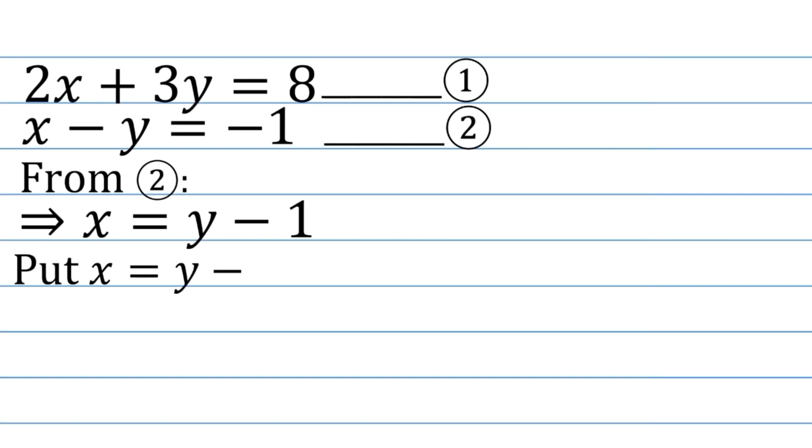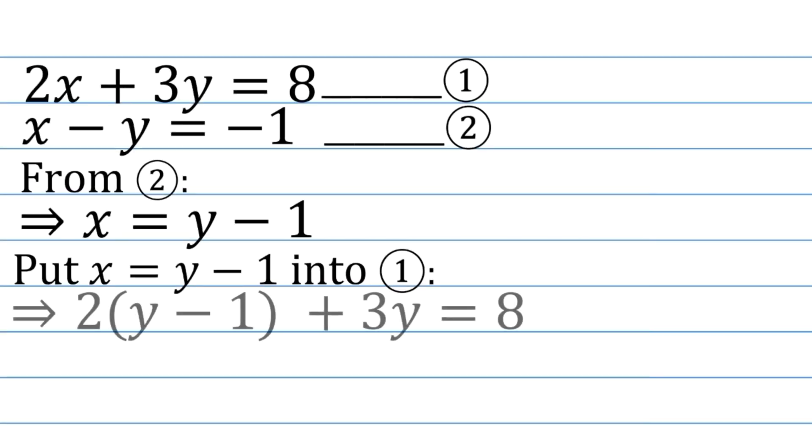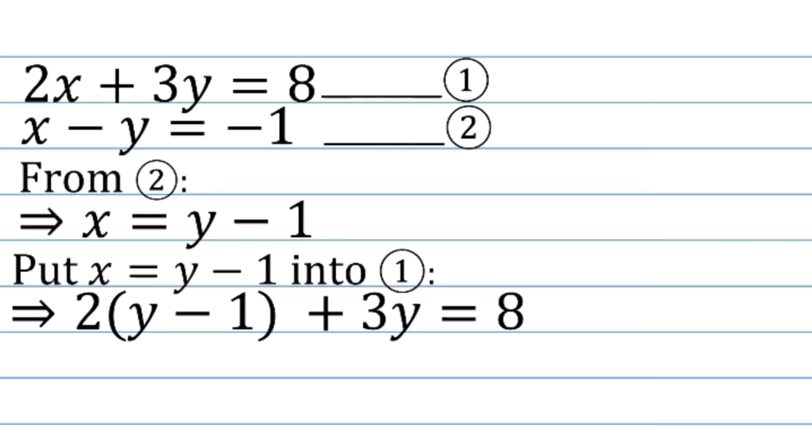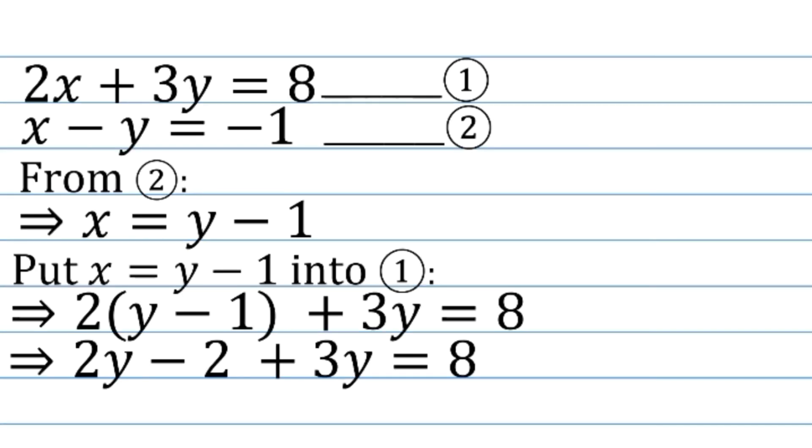Now, we'll substitute this expression for x into the first equation. Substituting x equals y minus 1 into 2x plus 3y equals 8, we get 2 times y minus 1 plus 3y equals 8. Distributing the 2, we have 2y minus 2 plus 3y equals 8.